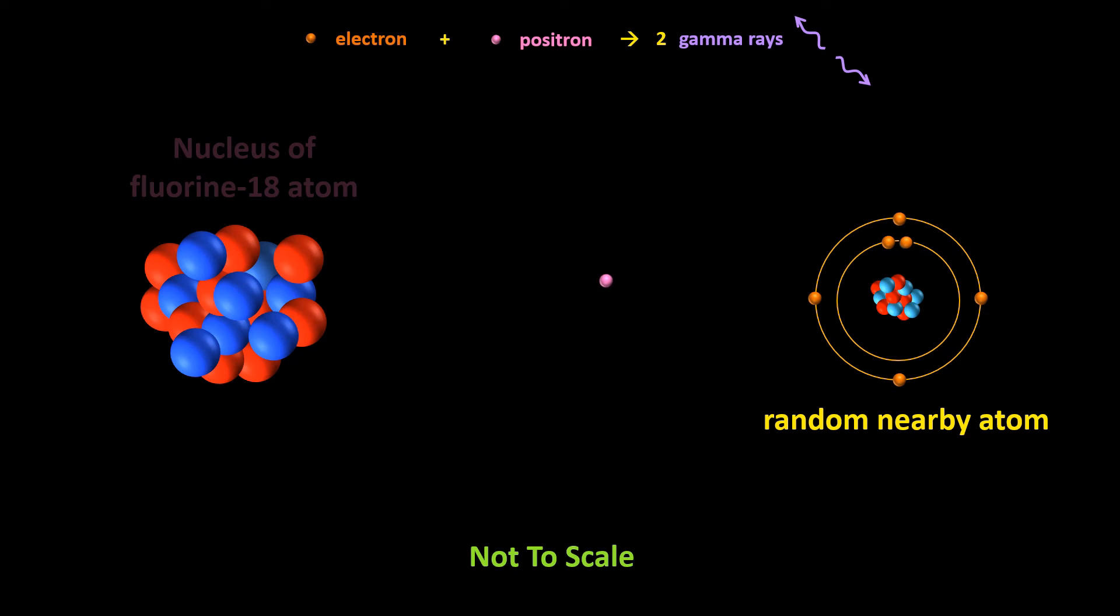can be created seemingly out of nowhere, but really out of the energy of the nucleus, and then when annihilation occurs, two gamma rays are created out of the energy of the positron and the electron. Amazing.